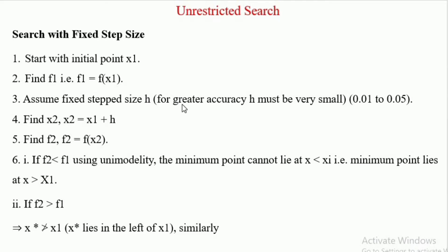The third step is: assume a fixed step size h. For greater accuracy, h must be very small. When accuracy is higher, h is very small — typically 0.01 to 0.05.